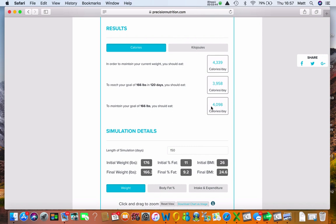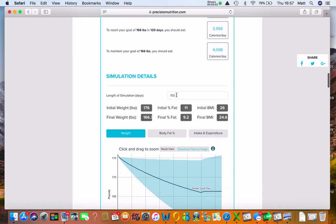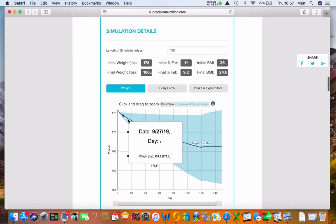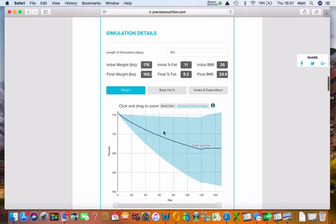And then once I get to 166 pounds, I need to consume this number of calories here. So it's gone up slightly from when we create our deficit. That's to do with my resting metabolic rate. The length of simulation here I put is 150 days. So you can see that during the first 120 days, I reach my target, and then I go on holiday or whatever I choose to do and I try to maintain that thereafter for the next 30 days.